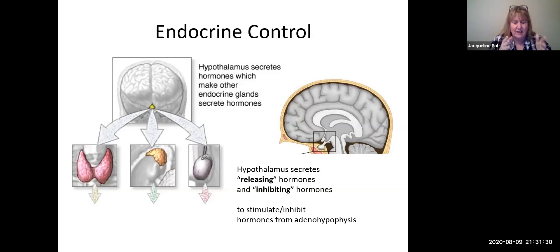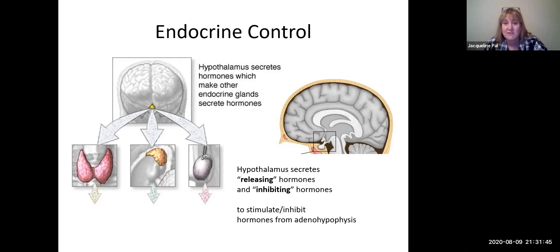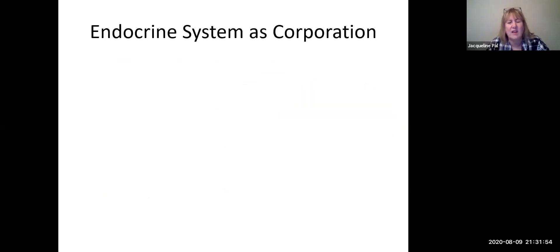So if I ask you about hormones made by the hypothalamus, it's going to be 'blank releasing hormone' if it's stimulating the adenohypophysis, or 'blank inhibiting hormone' if it's inhibiting it.